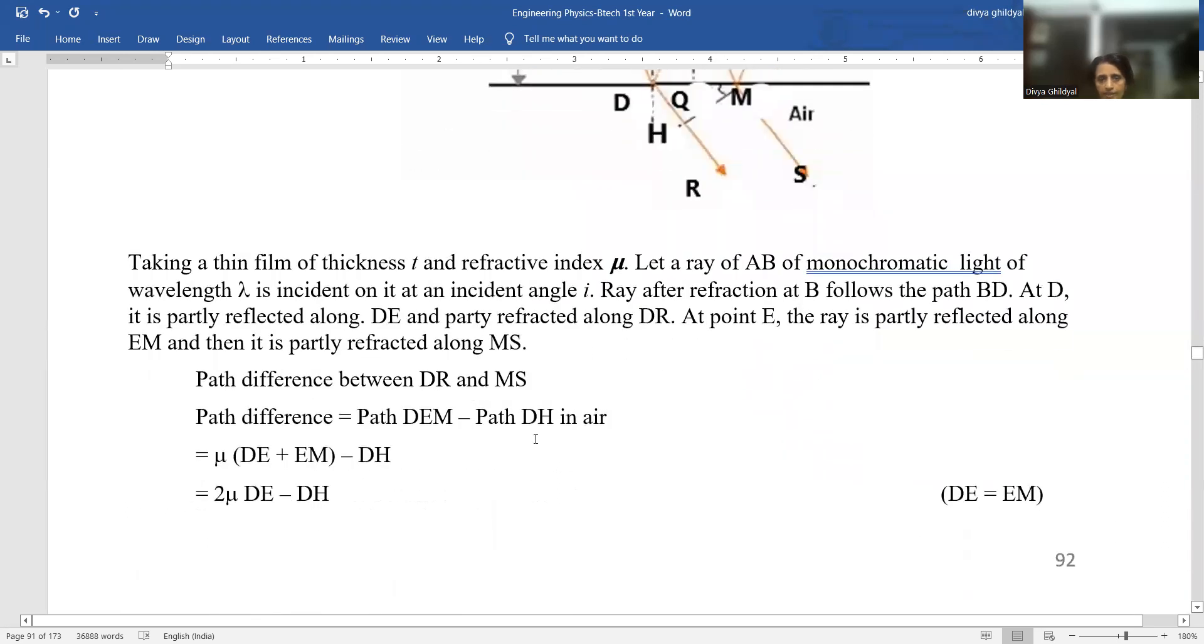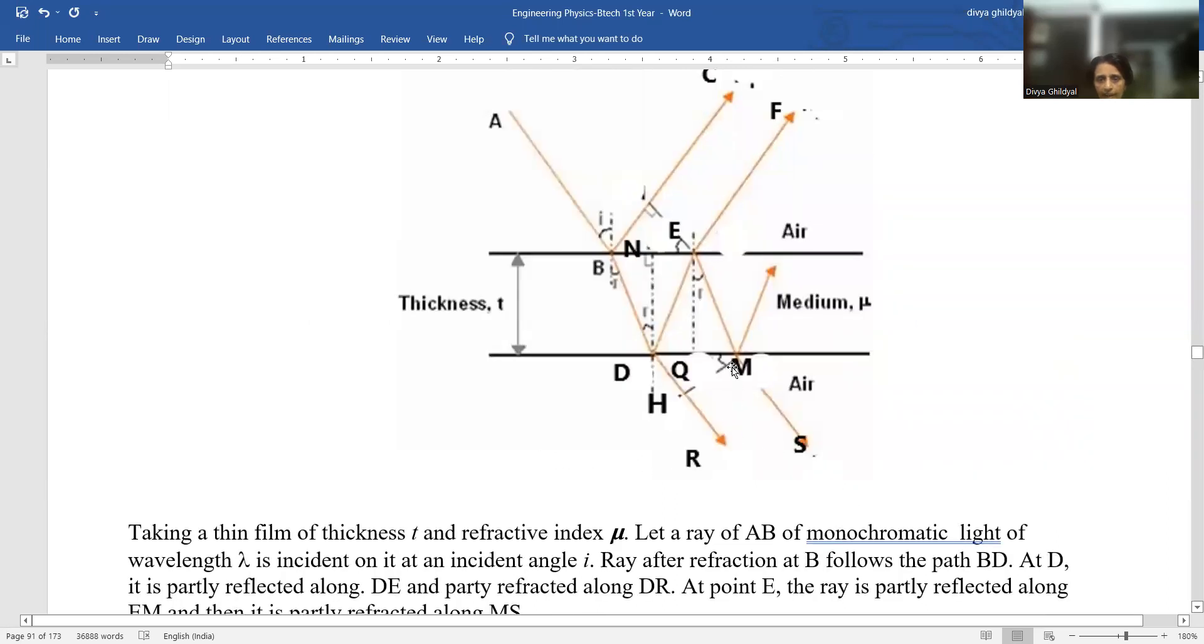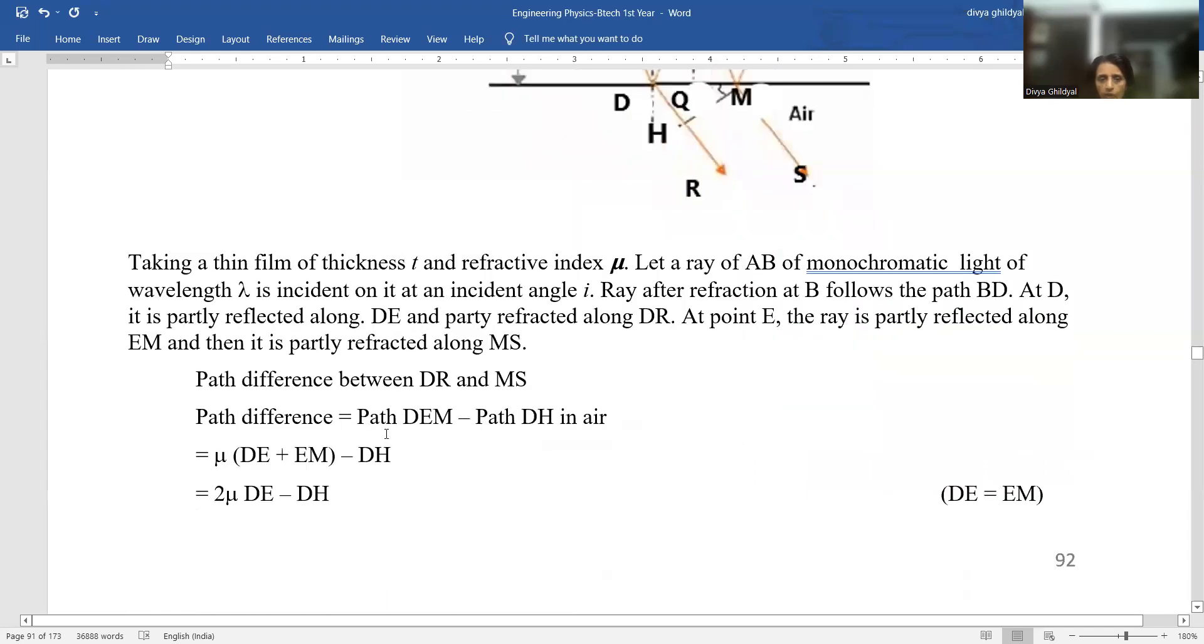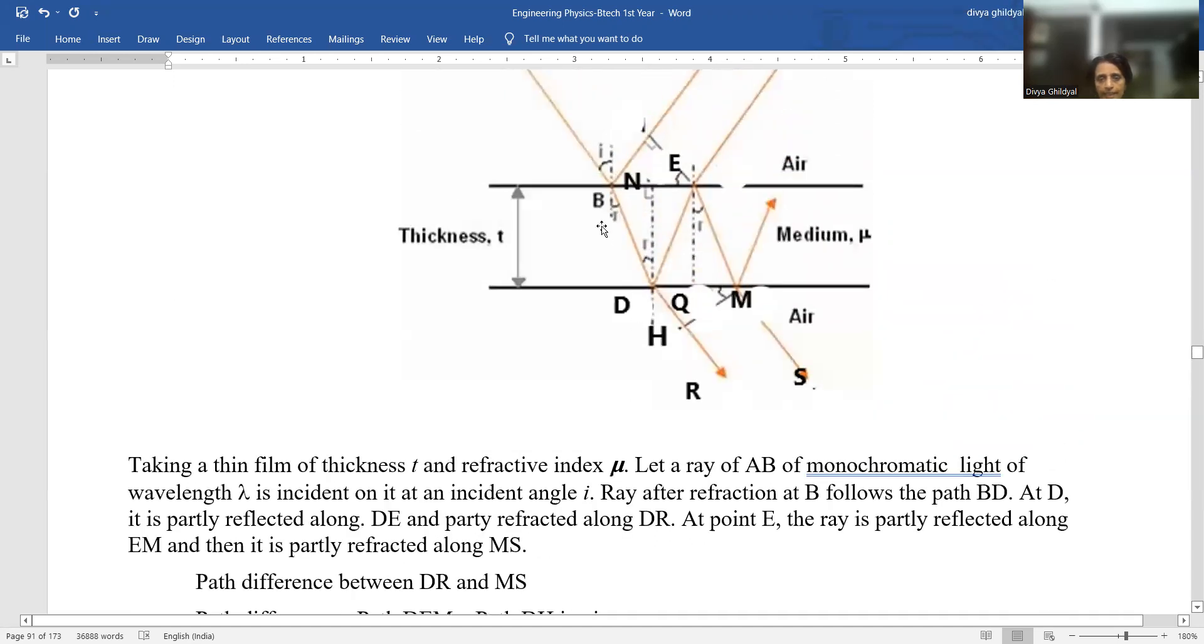Path difference between DR and MS, the transmitted rays, is equal to path traveled in the medium because of which I will take mu and path traveled in air where I will not take mu. So path DEM minus path DH in air.